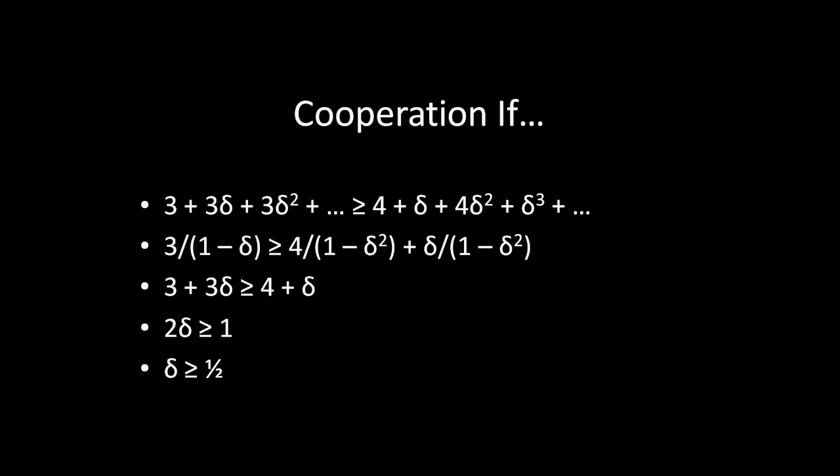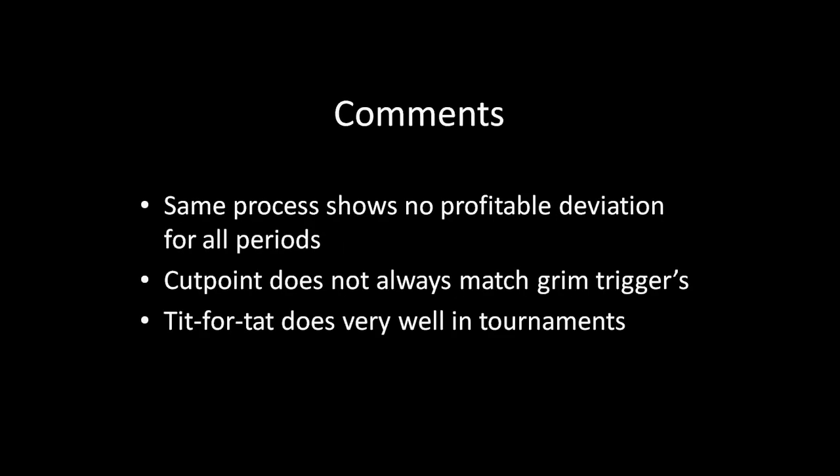Okay, so now we can get some comments on what's going on here with Tit for Tat. First is that the same process that we went through here to show that there was no valuable or no profitable deviation in the first period is the same process that we can show for any generic period that a player would not want to deviate. This is just like what we did in the grim trigger strategy lecture, where we showed that the same logic behind why a player wouldn't want to deviate in one period holds to every other period, and so we can thereby conclude that in no period on the path of play would either player want to deviate from these Tit for Tat strategies. So that's a good thing. That's cool.